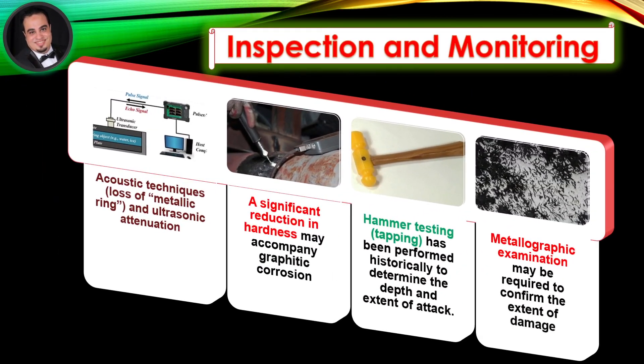Inspection and monitoring: Acoustic techniques — loss of metallic ring and ultrasonic attenuation — can be used. A significant reduction in hardness may accompany graphitic corrosion. Hammer testing (tapping) has been performed historically to determine the depth and extent of attack. Metallographic examination may be required to confirm the extent of damage.